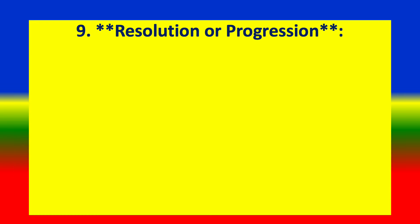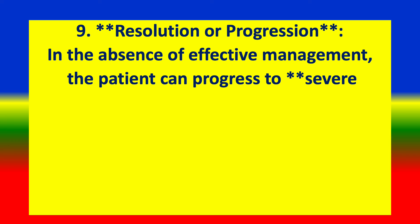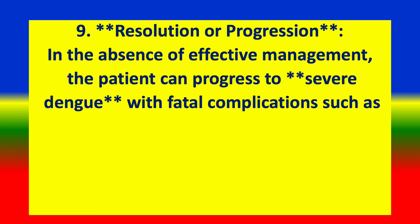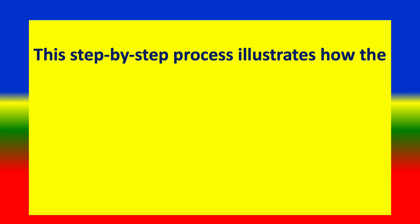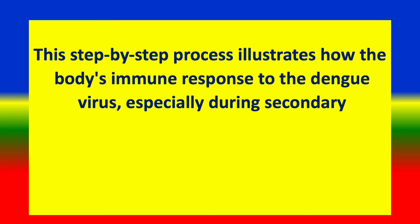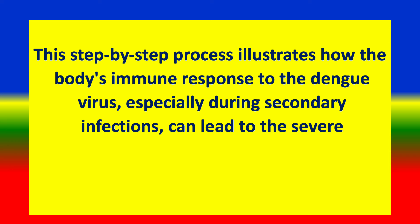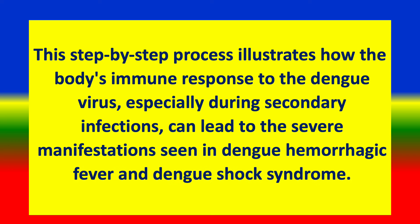Step 9, resolution. In the absence of effective management, the patient can progress to severe dengue with fatal complications such as profound shock or organ failure. This step-by-step process illustrates how the body's immune response to the dengue virus, especially during secondary infections, can lead to the severe manifestations seen in dengue hemorrhagic fever and dengue shock syndrome.